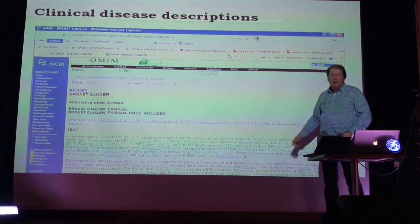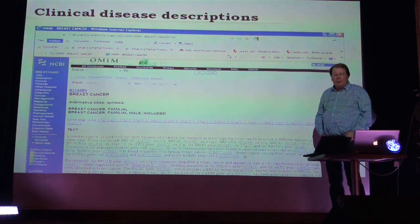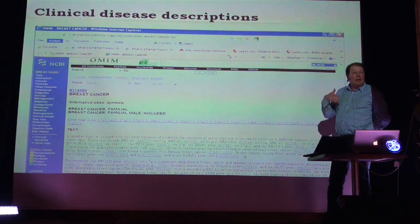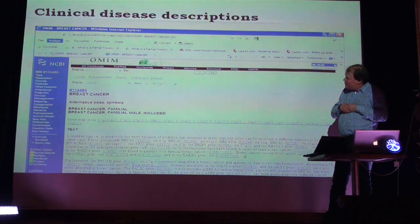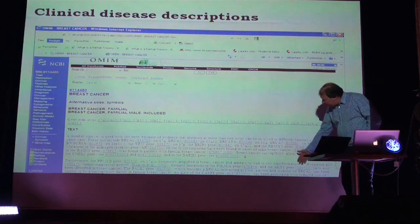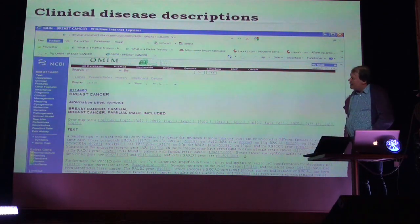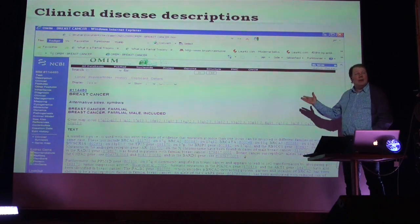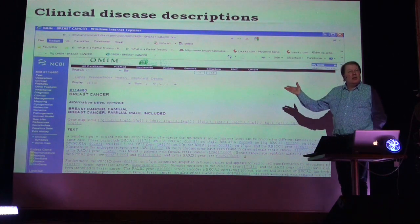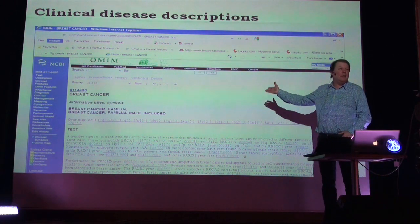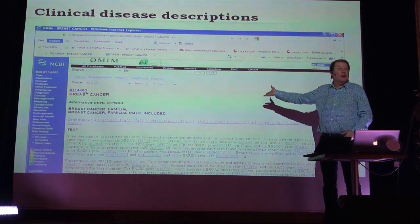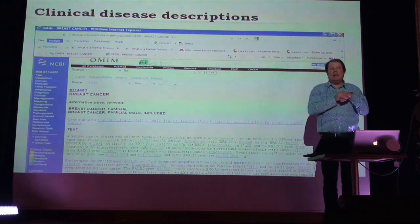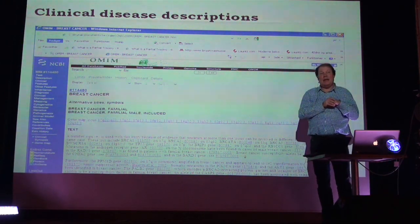We are using computer methods similar to what Google does when ranking documents on the internet. For example, we take a disease description from a database - breast cancer here - and ask how similar it is to other diseases. How similar is breast cancer to schizophrenia? What is the likelihood that two diseases actually share a gene?